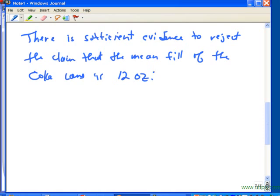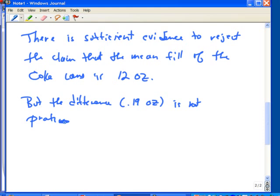So, we found a statistically significant difference. But if we think about it, the difference is not practically different. So, let me write that down. But the difference, which is 0.19 ounces, is not practically different. In other words, if you're drinking a can of Coke, you wouldn't know if there was 0.19 ounces missing or it was over 12.19 ounces. It's a very small volume.